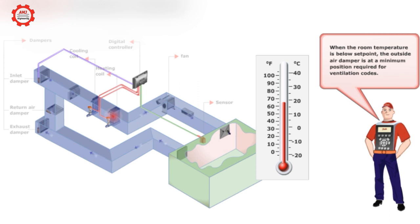When the room temperature is below set point, the outside air damper is at a minimum position required for ventilation codes.